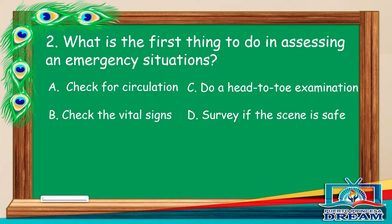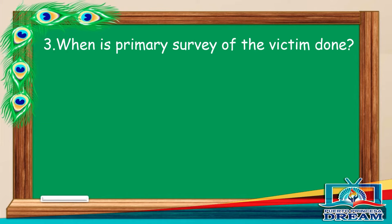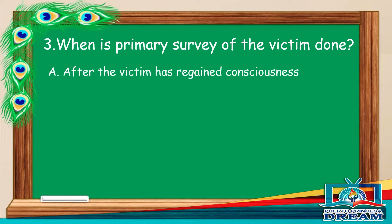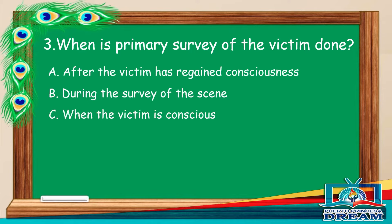Number 3. When is primary survey of the victim done? A. After the victim has regained consciousness. B. During the survey of the scene. C. When the victim is conscious. D. When the victim is unconscious.